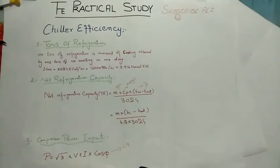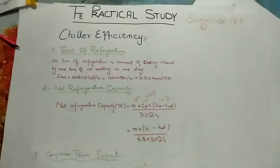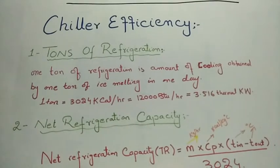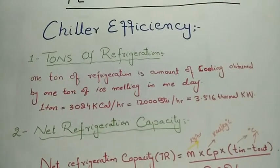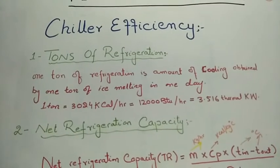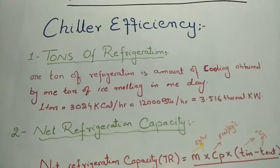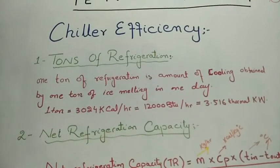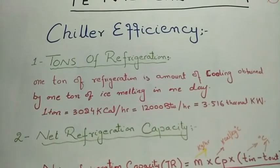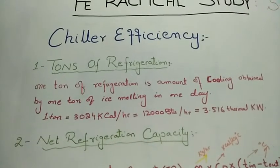The very first basic term is: what is tons of refrigeration? One ton of refrigeration is basically the amount of cooling which is obtained by one ton of ice melting in one day. One ton is equal to 3024 kilocalories per hour, and also equal to 12,000 BTU per hour.